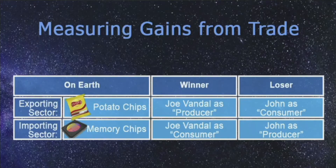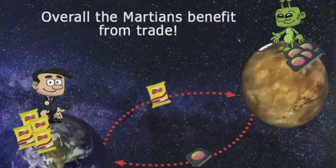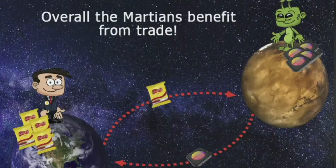Producers in a country's importing sector lose. John must compete with the Martians and lower his memory chips price and production. This means that consumers gain from buying cheaper imported goods but lose by paying more on the exported goods. Therefore, if the winner's gain is greater than the loser's loss, there is a gain from trade in each sector. Similarly, when Martians export memory chips and import potato chips, there are also winners and losers in each sector, but overall the Martians still benefit from trade.